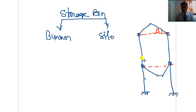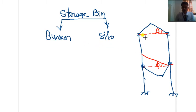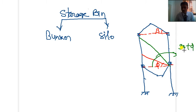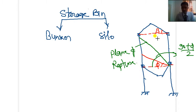Another important angle is the angle of repose — the angle between the ingredient or material and concrete — denoted by phi. Also, a plane of rupture is formed for different types of structures. The plane of rupture makes an angle with the horizontal equal to 90 plus phi divided by 2. These are the basic terminologies: beta is the angle of surcharge and phi is the angle of repose.